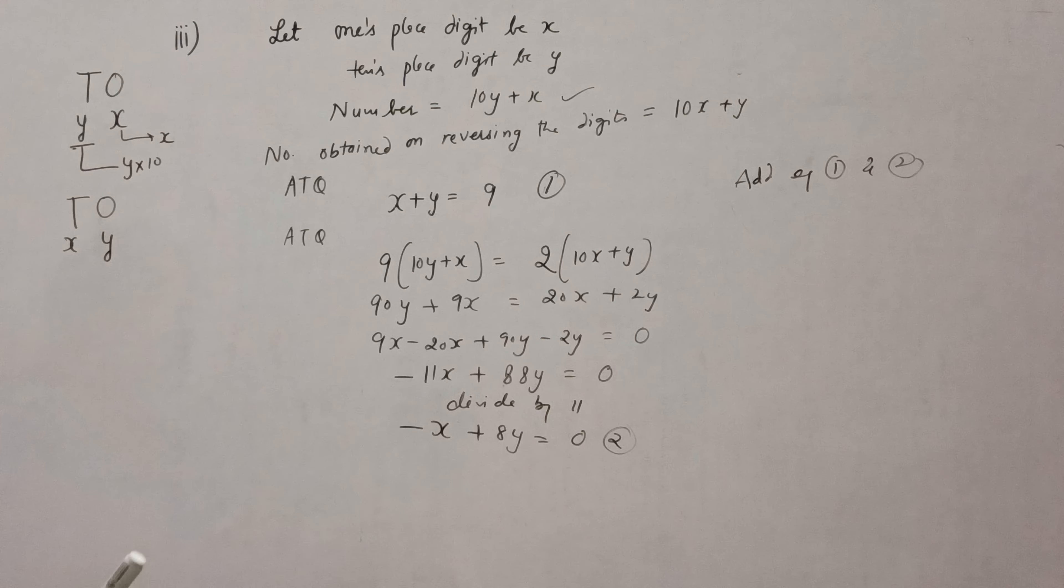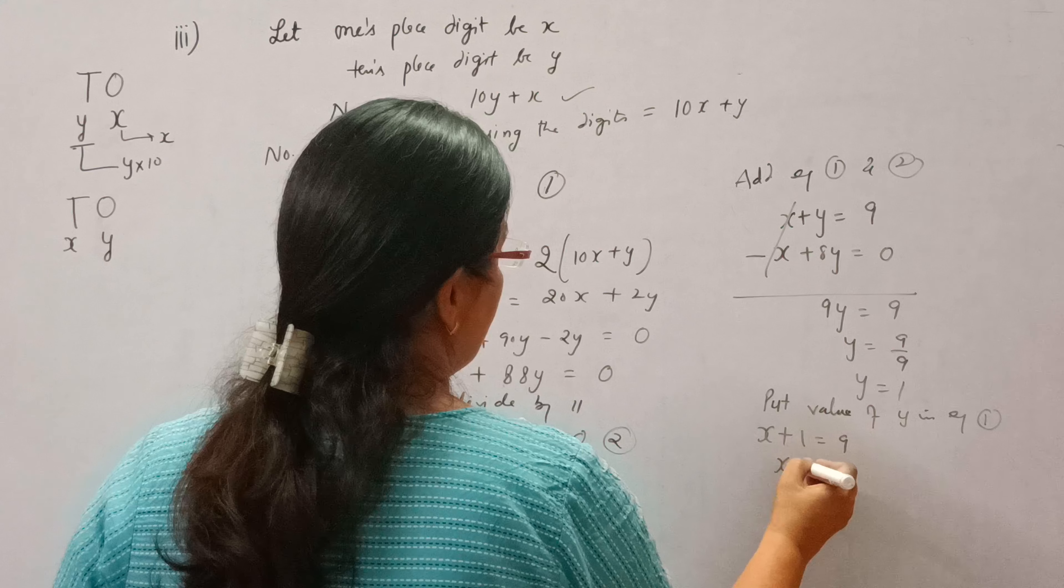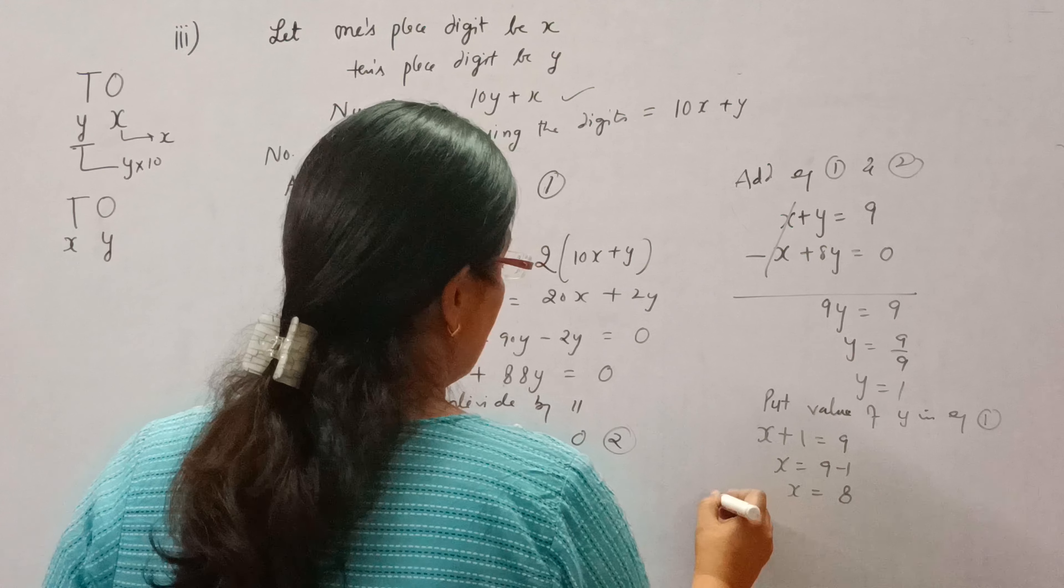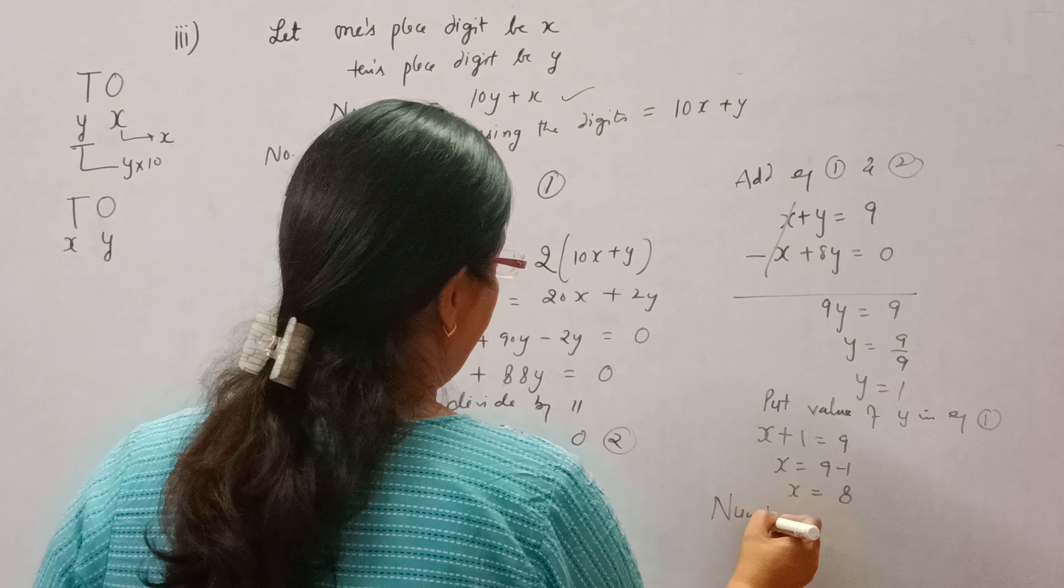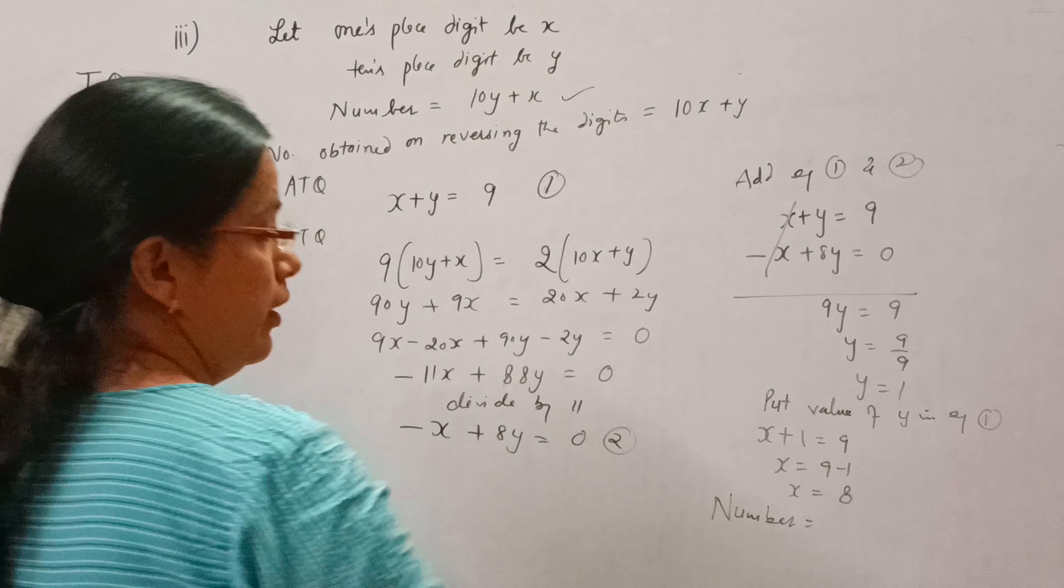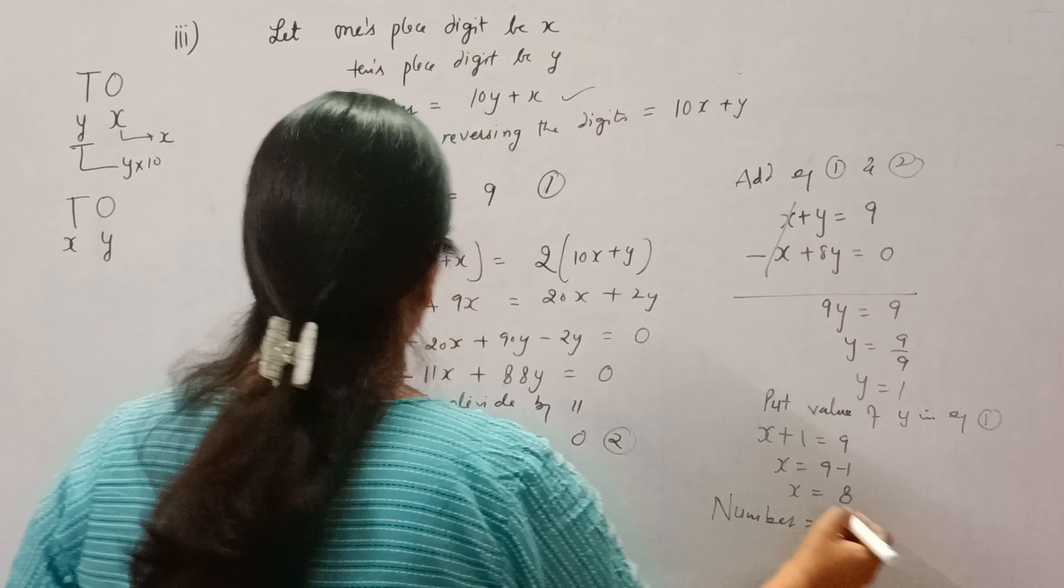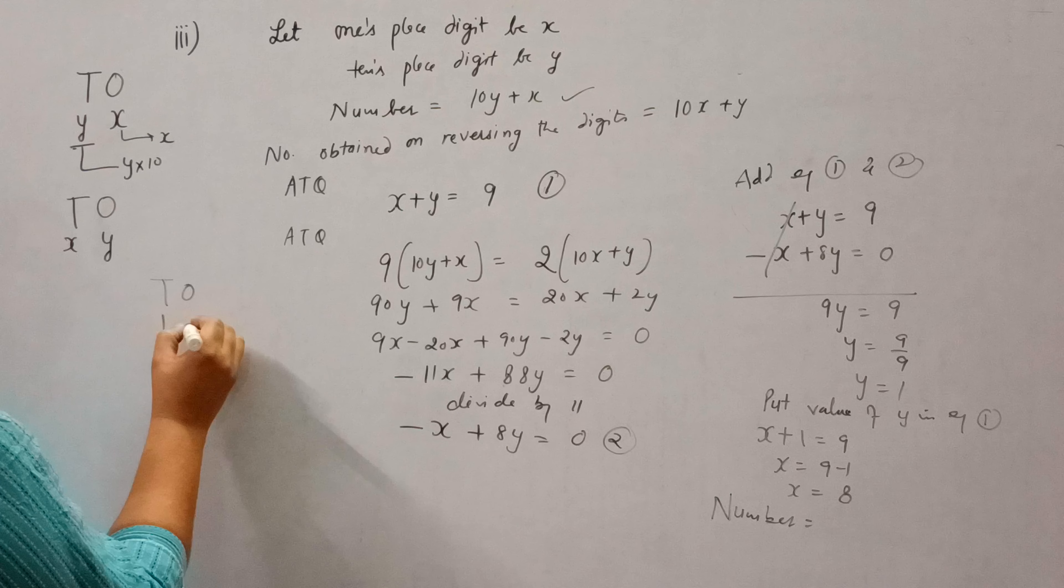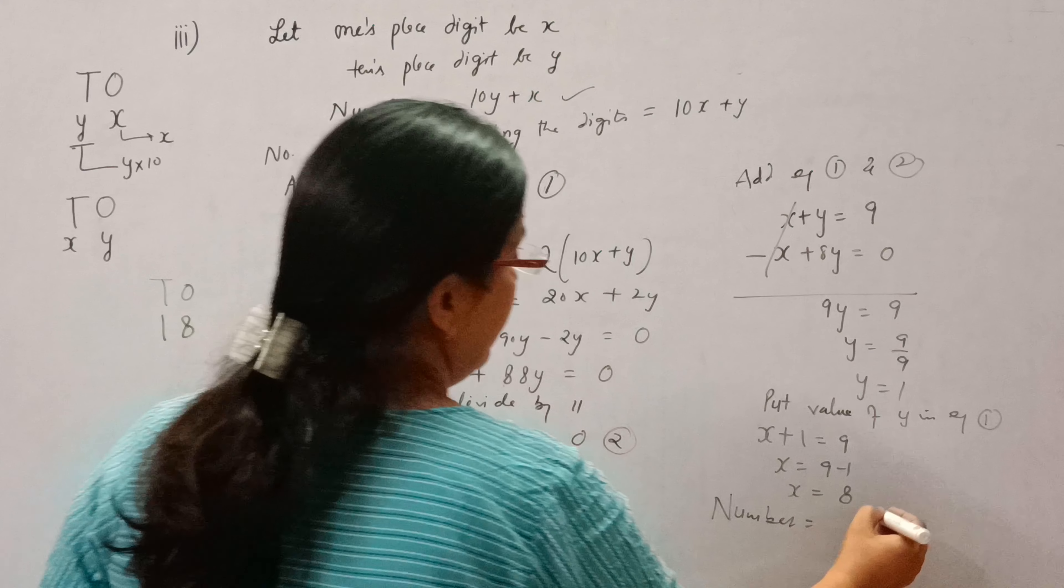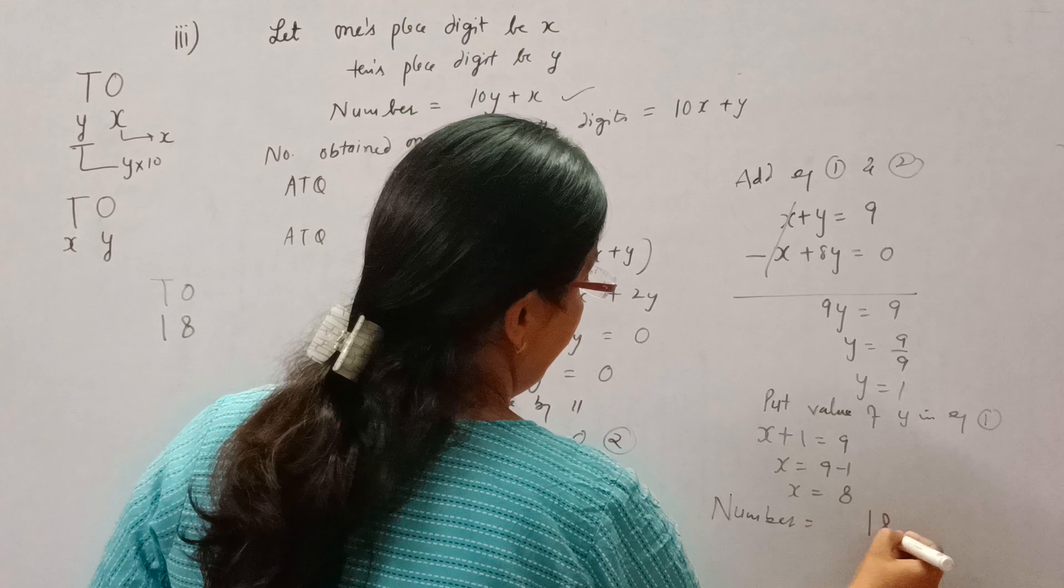Find the number. So let 1s place digit be x and 10s place digit be y. See, this is 1s place digit and this is 10s place digit. So the number will be, we will multiply 10s digit by 10 and add 1s place digit in it. So it will be 10y plus x.